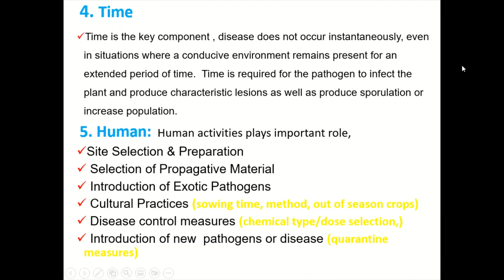Regarding the remaining components of the disease pyramid, number four is time — it is a key component. Disease will not occur instantaneously. Even in situations where the environment is favorable for an extended period, time is required for the pathogen to infect the plant and reproduce, and to produce characteristic symptoms in the form of lesions, as well as sporulation and development of the inoculum population.